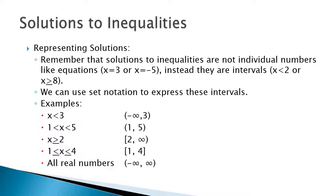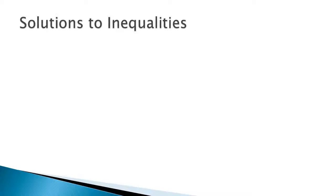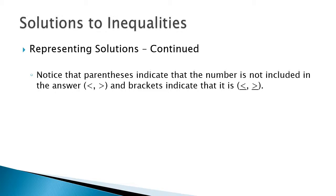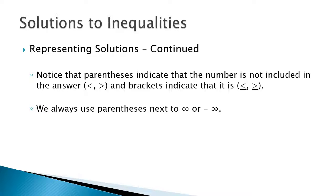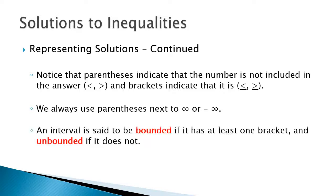All real numbers is expressed in set notation by using negative infinity to infinity. Parentheses indicate the number is not included in the answer, which would be a less than or greater than. Brackets indicate that it is, and that's where we have the less than or equal to and the greater than or equal to. We always use parentheses next to infinity or negative infinity. An interval is said to be bounded if it has at least one bracket, and unbounded if it does not.